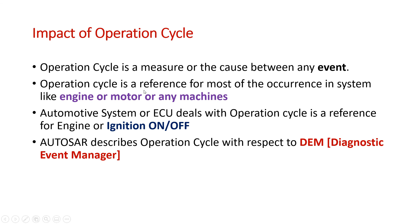For automotive systems or the ECU, the operation cycle is a reference for engine or ignition on/off — this is the system level. The ECU is a kind of hardware at the system level. In AUTOSAR, which is completely about software architecture, the operation cycle is described with respect to DEM — the Diagnostics Event Manager. DEM is one module in AUTOSAR that deals with events.